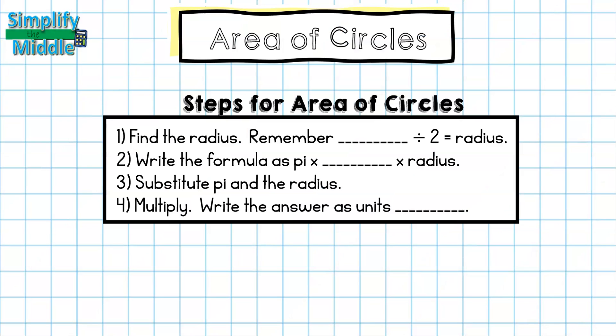Let's wrap up. My steps for area of circles. Step 1: Find the radius. Remember that the diameter divided by 2 is also radius if they give you a diameter. Step 2: Write the formula as pi times radius times radius.